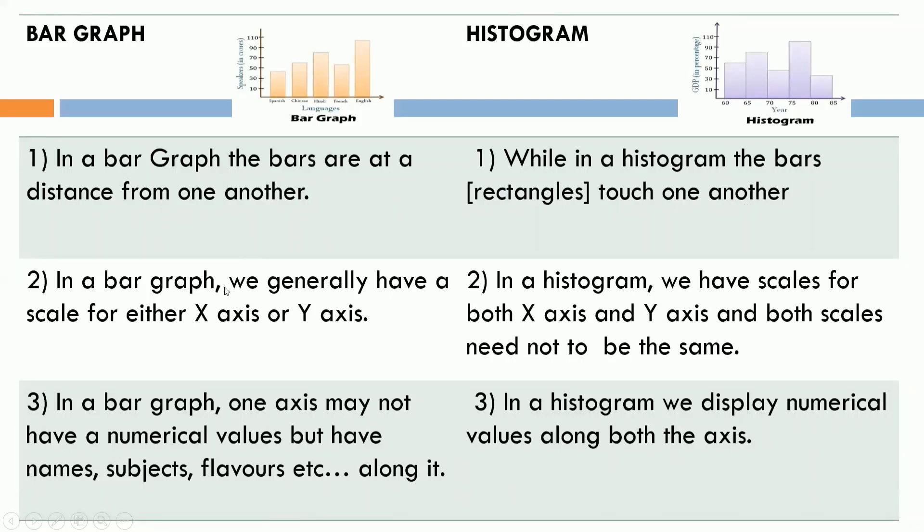Here, we have a scale for either x-axis or y-axis. While here, in case of histogram, we have scales for both axes. That is, x and y and both the scales need not to be the same. That means, if for x, it is 1 unit is equal to 1 unit, then for y, it can be 1 unit is equal to 2 units also.